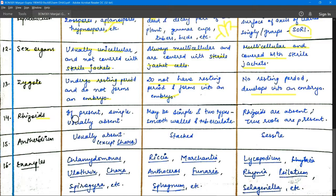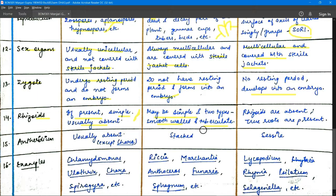Regarding rhizoids: algae have simple unicellular rhizoids present. Bryophytes have rhizoids of two types — smooth and tuberculate — which perform the functions of absorption of nutrients and attachment to the substratum, since true roots are absent. In pteridophytes, rhizoids are absent because true roots are present and there is no need for root-like structures.